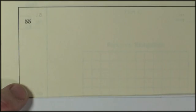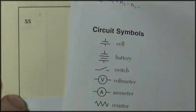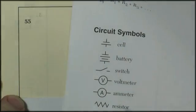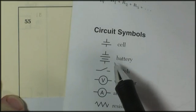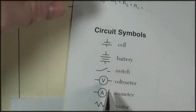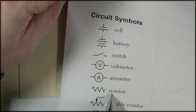Alright, well, here's the circuit symbols. There's a battery. And here's a voltmeter. And here's a resistor.